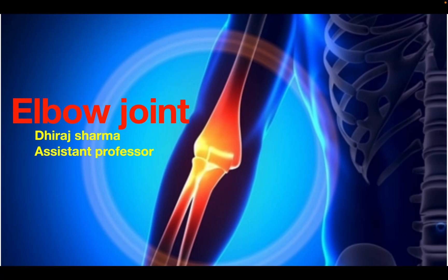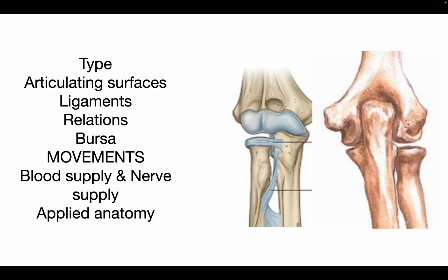Today's lecture is regarding the elbow joint. We will cover the type, articulating surface, ligament, relations, bursa, movements, blood supply, nerve supply, and applied anatomy related to the elbow joint.